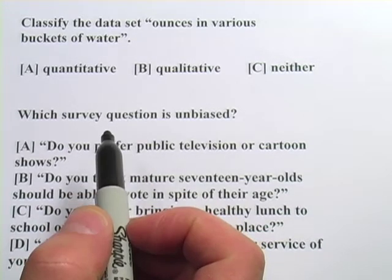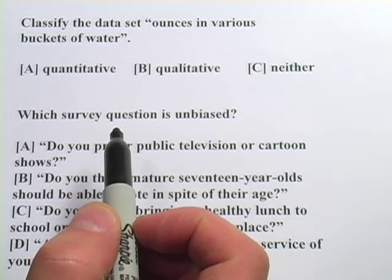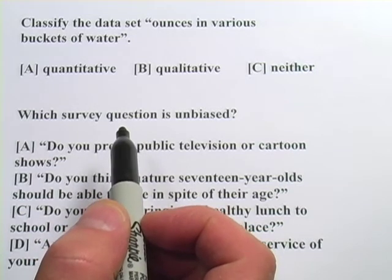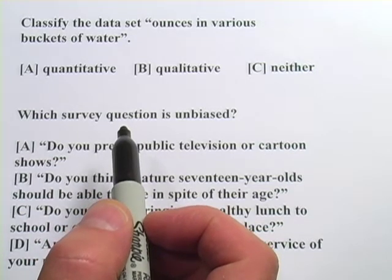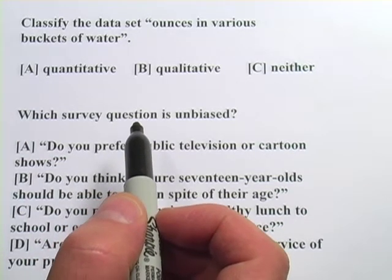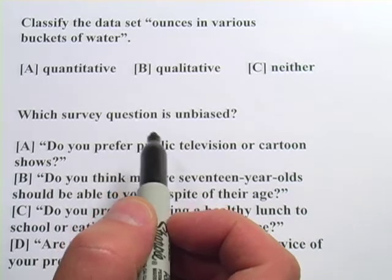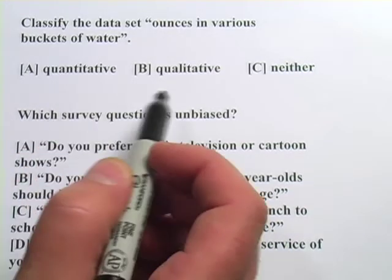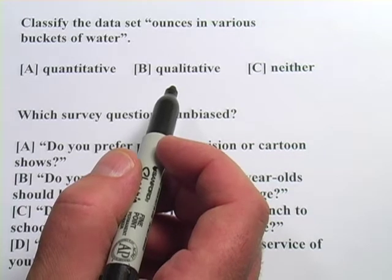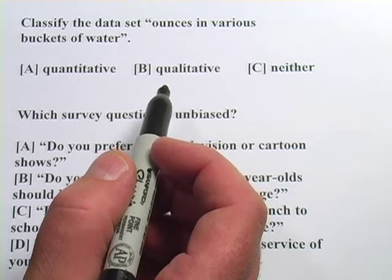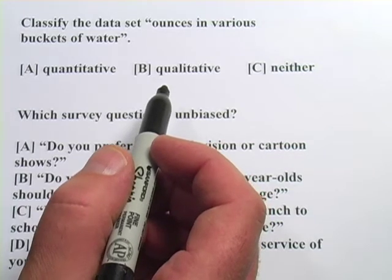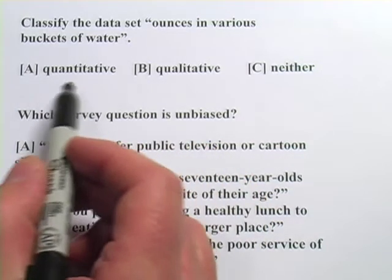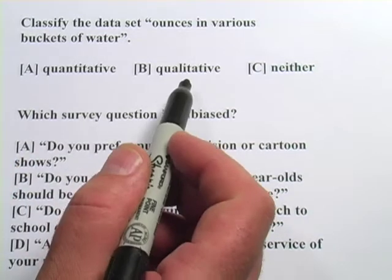In this next objective, we're really dealing with questions about how surveys are designed. There's just some terminology that you need to learn to get these questions right. The first important one is the difference between quantitative and qualitative. Basically, when you ask a question or give an answer, you can do it in a numbers way or a non-numbers way.